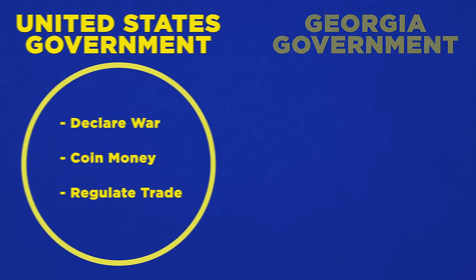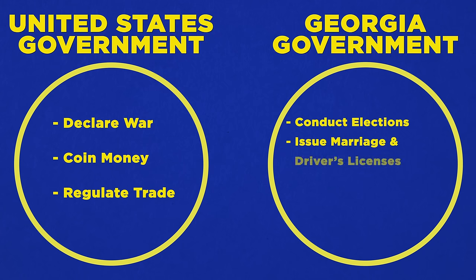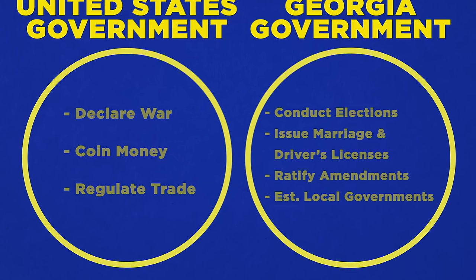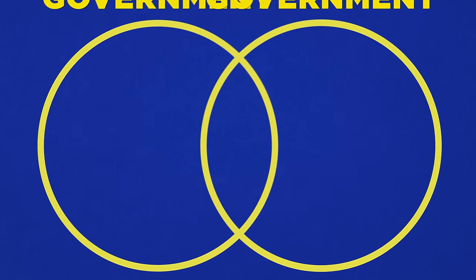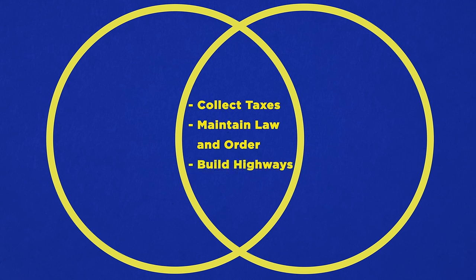Other powers belong exclusively to the states. These reserve powers include conducting elections, issuing marriage and driver's licenses, ratifying amendments to the U.S. Constitution, and establishing local governments for cities and counties. There are also shared powers between state and federal governments, including the power to collect taxes, maintain law and order, and build highways.